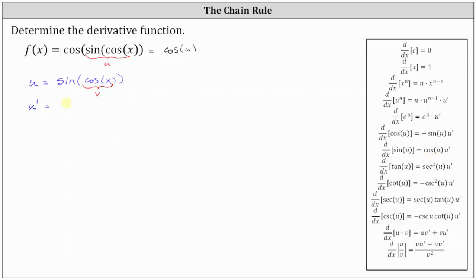This gives us u prime equals cosine of v, which is cosine x, times v prime, which is the derivative of cosine x with respect to x, which is negative sine x. So u prime equals negative cosine of cosine x times sine x.